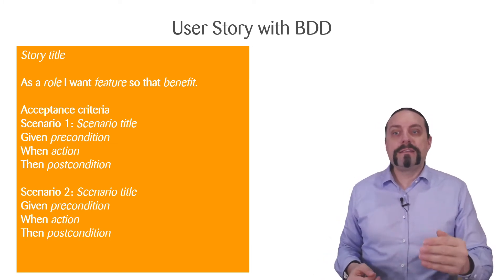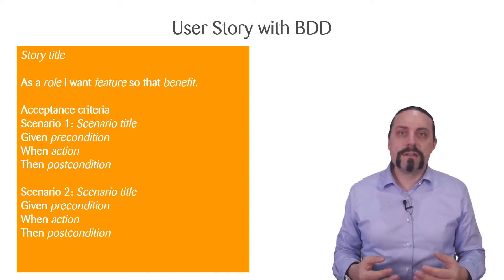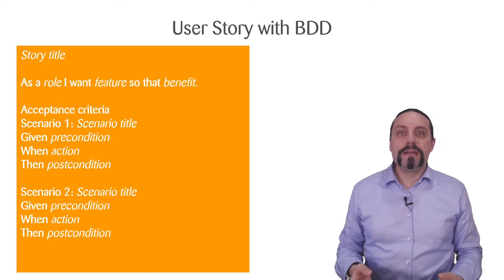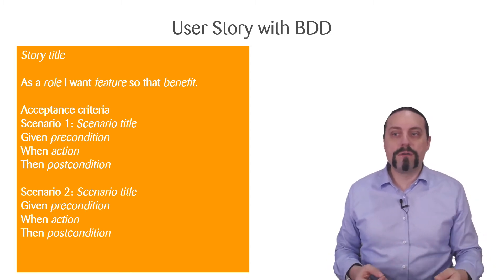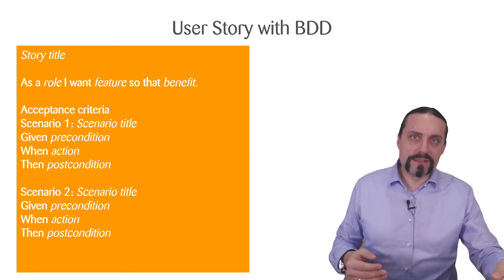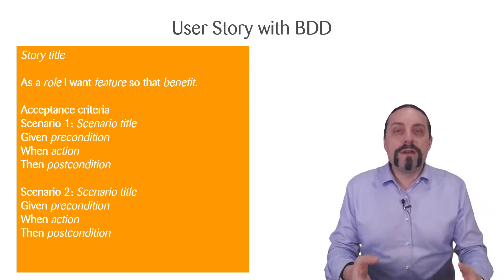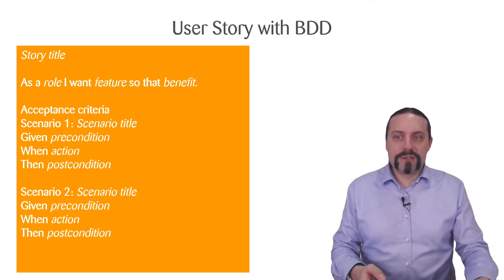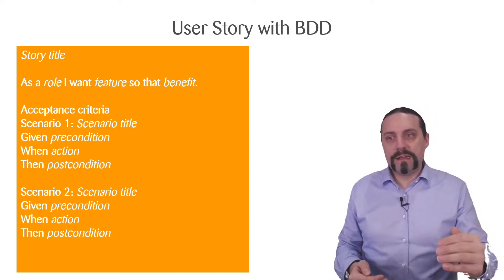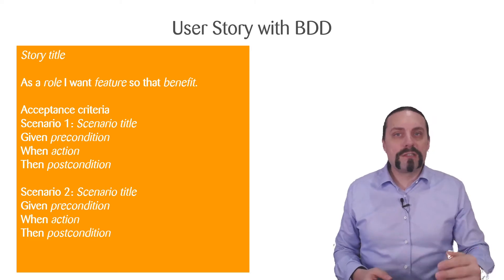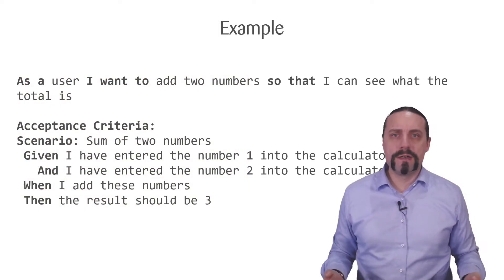I want to have that feature so that I get this benefit. What we have is the so-called acceptance criteria, which are written in scenarios in a given/when/then form. We always have a given, which is the precondition or current condition we are in. Then when we are doing the following action, then we want to have this result. We can have multiple of these acceptance criteria.